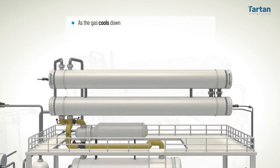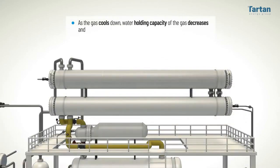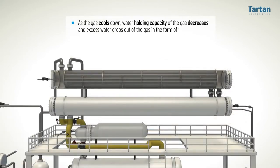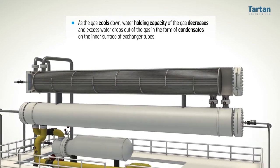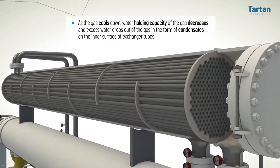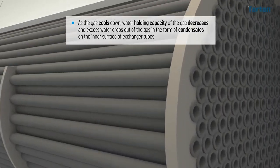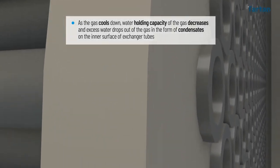As the gas cools down, the water-holding capacity of the gas decreases and excess water drops out of the gas in the form of condensates on the inner surface of the exchanger tubes.